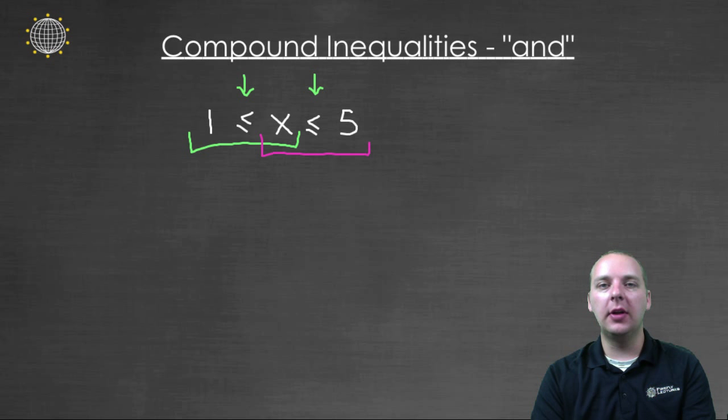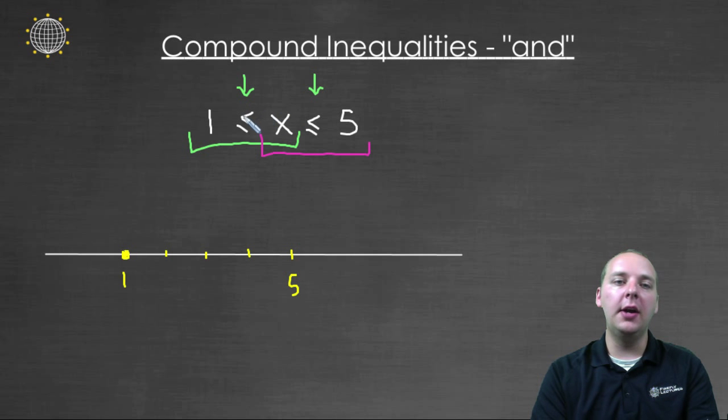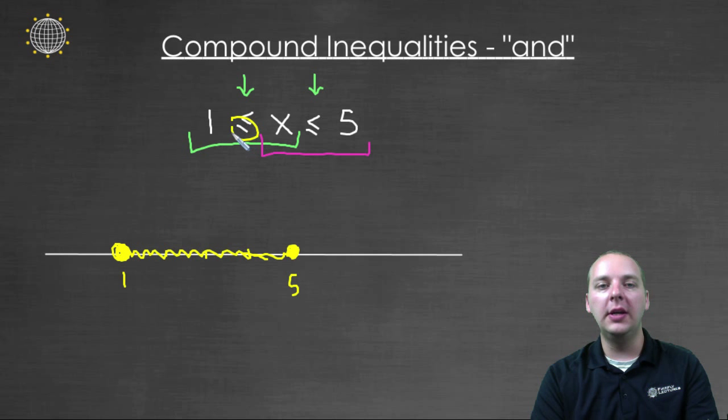So here's what these guys look like on a number line. So basically, what it would look like is you would have one, let's say right here. Then you would have two, three, four, let's say right here is five. You would want the x's greater than one, or past one, but at the same time they would also have to be less than or equal to five. So we would have a closed dot at one, a closed dot at five, because these are also or equals to inequalities. And so these x's would satisfy this compound inequality.